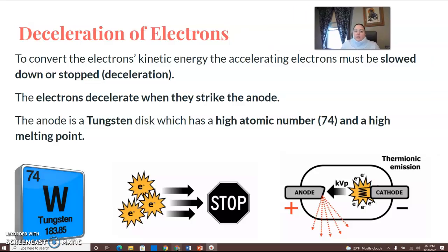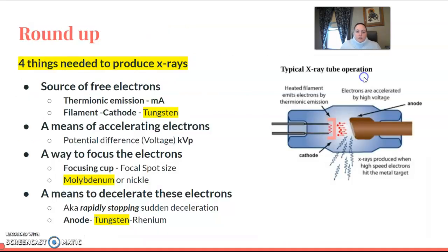We need a deceleration or a way to stop or slow down the electrons. The KVP kicks the electrons into gear from the cathode and shoots them over to the anode. They connect with the anode, which is made of tungsten, and that's where they decelerate. The anode is a tungsten disk with a high atomic number (74) and a high melting point.